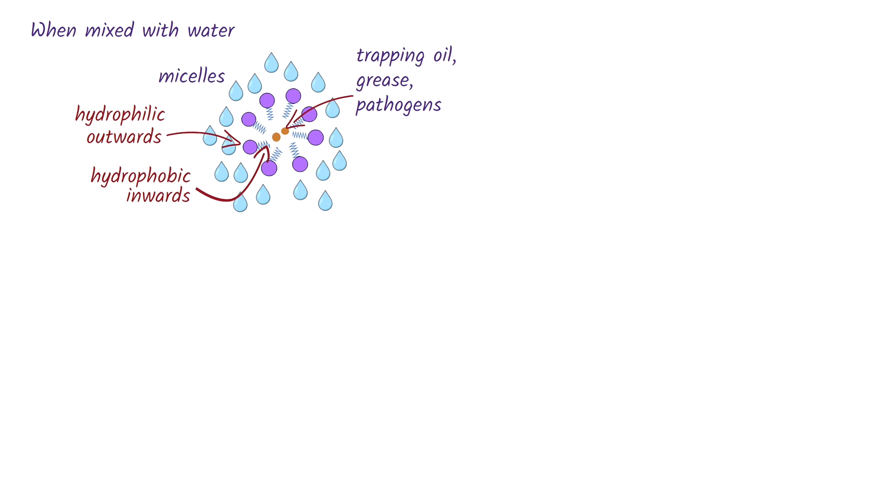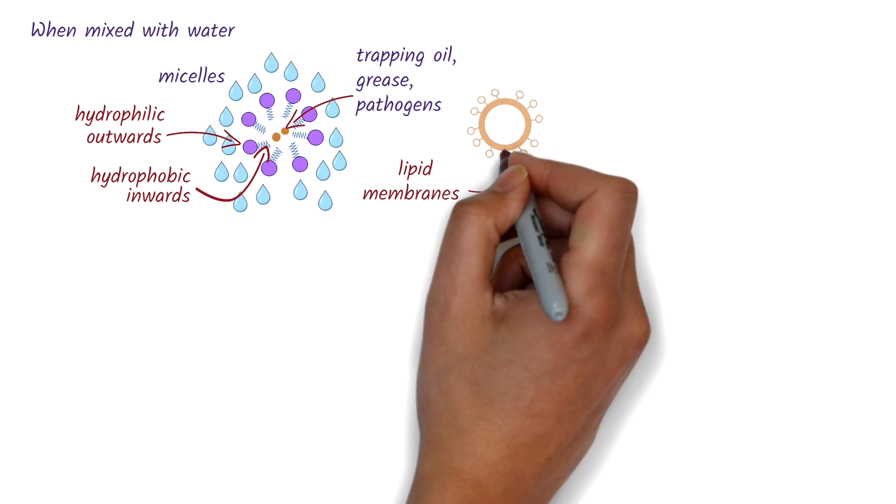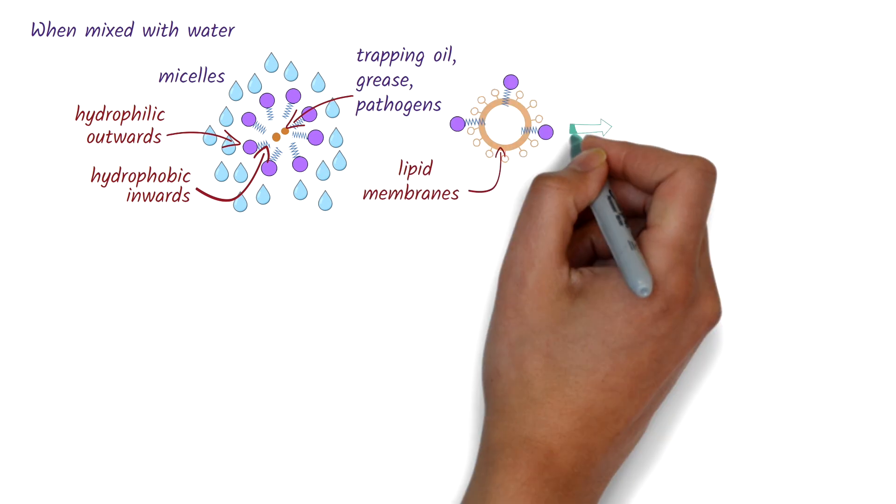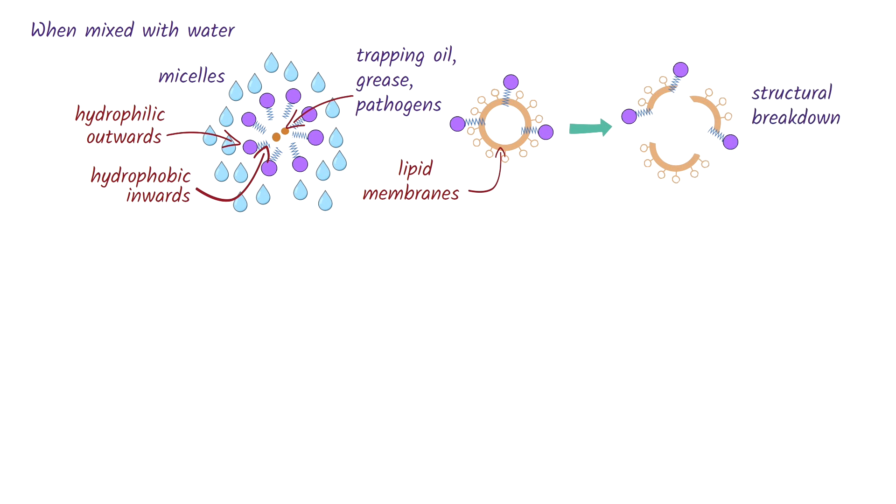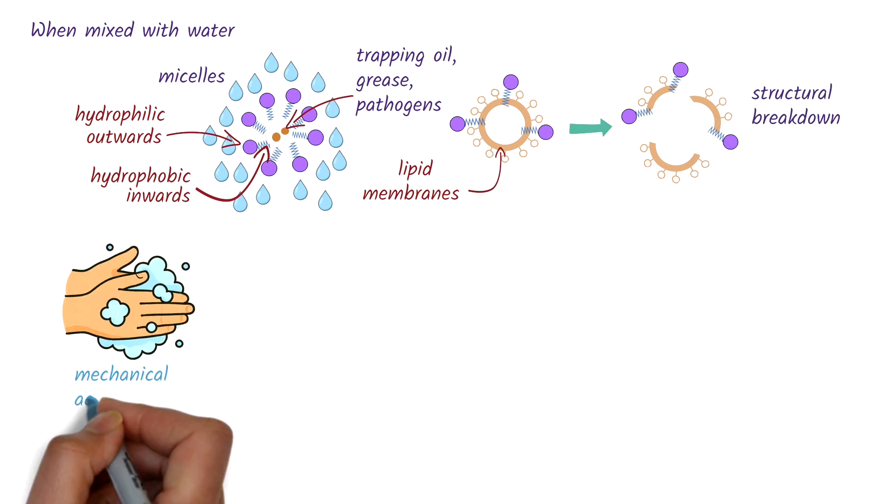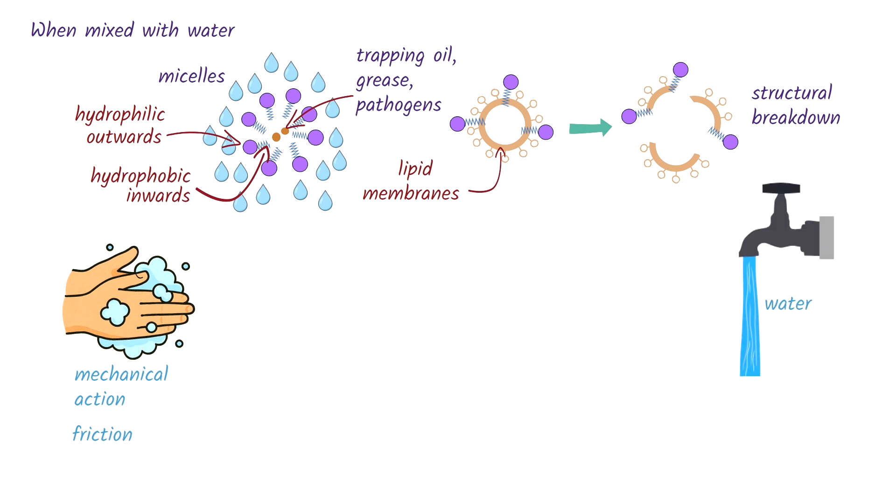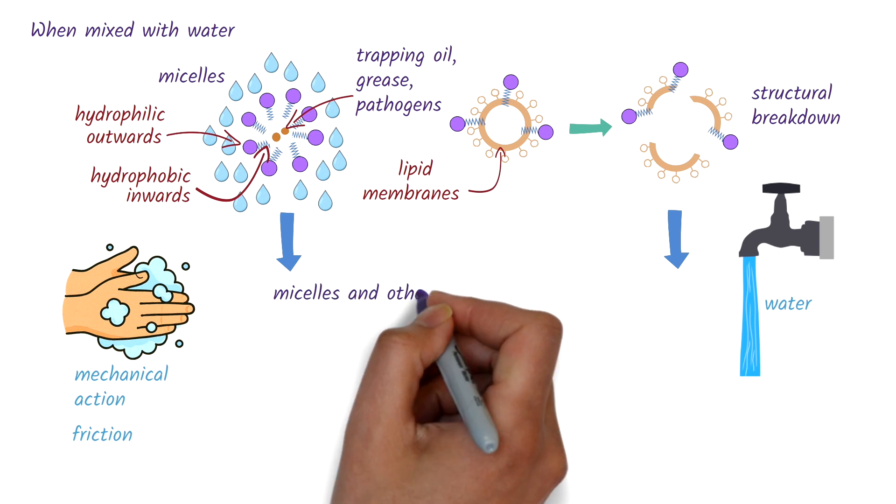In addition to this, soap can also disrupt the lipid membranes of some pathogens, leading to their structural breakdown and inactivation. The mechanical action of rubbing hands together during washing generates friction that physically dislodges any microorganisms, dirt, organic material, and dead skin cells.